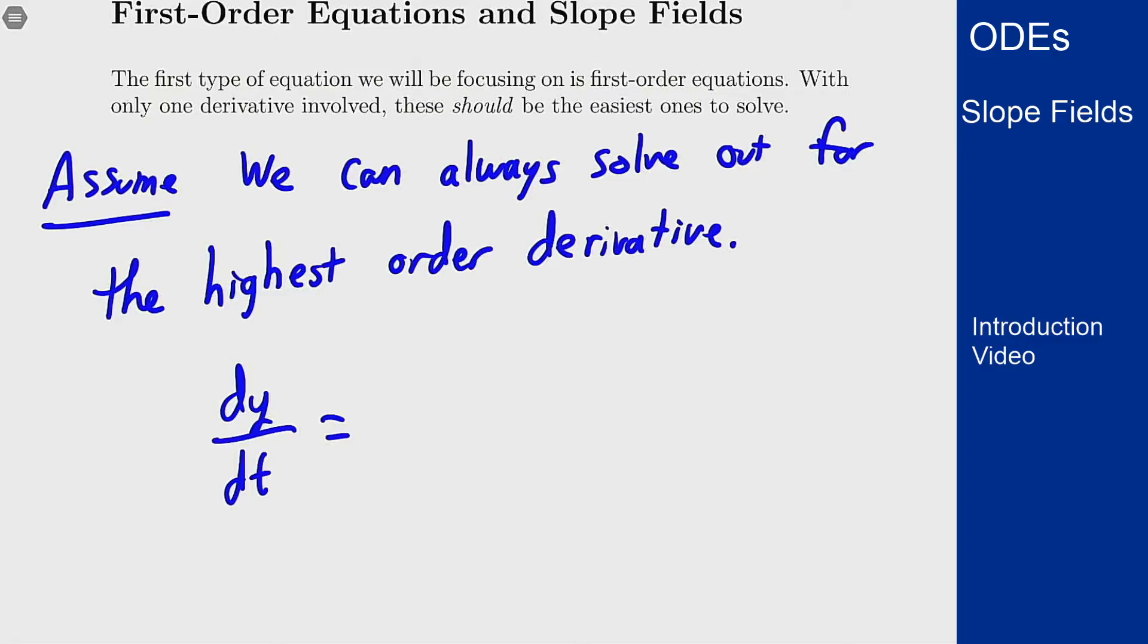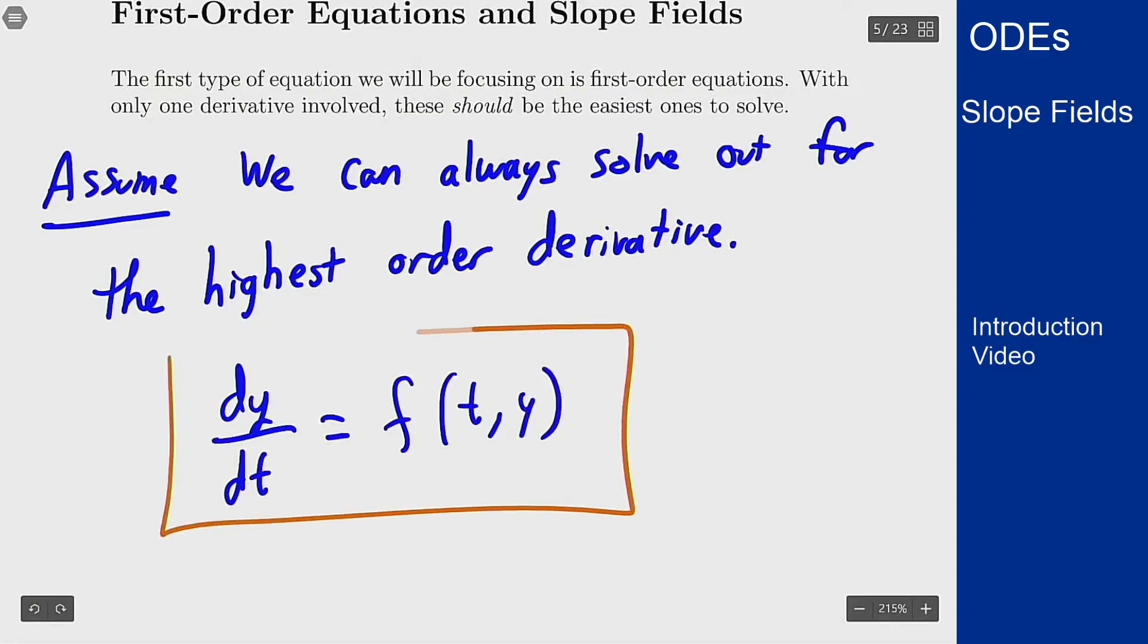So I can write my dy/dt equaling some function f of t and y and that gives us the most general first order differential equation which we could ever have. If we assume we can solve for the highest order derivative then this is the most general thing we can have. All first order equations look like this in some form or other for some choice of f.